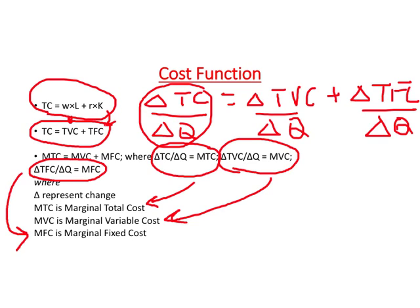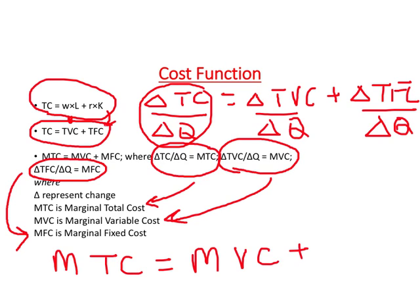What we find here is that MTC can be broken down into two parts — it is simply the sum of MVC and MFC.